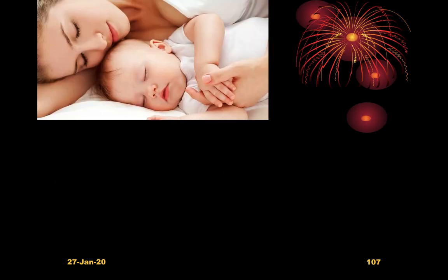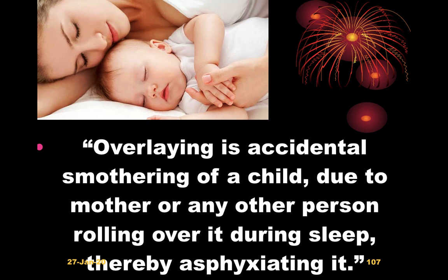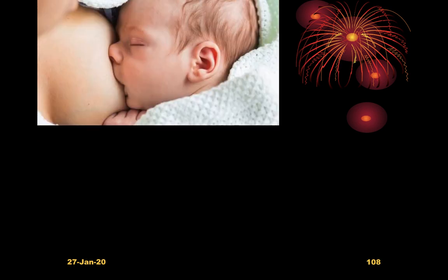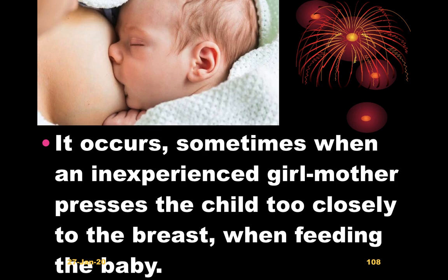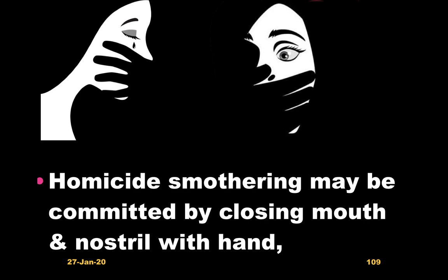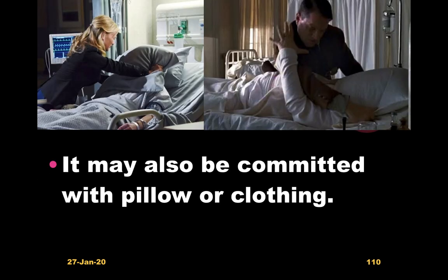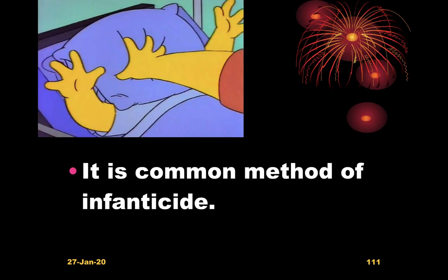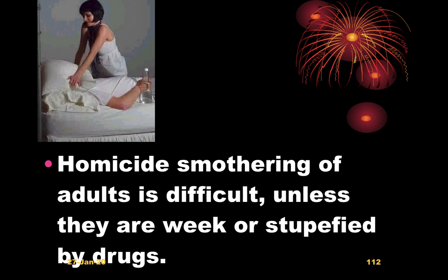Overlaying is accidental smothering of a child due to a mother or any other person rolling over it during sleep. It occurs sometimes when an inexperienced mother presses the child too closely to the breast while feeding. Homicidal smothering may be committed by closing the mouth and nostrils with the hands, or with a pillow or clothing. It is a common method of infanticide. Homicidal smothering of adults is difficult unless they are weak, stupefied by drugs, or diseased.